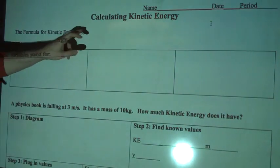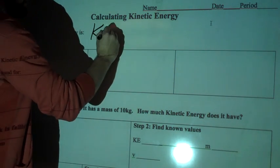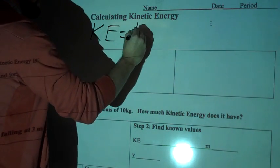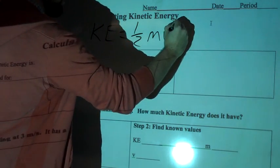We talked about potential energy before and now we're going to get to kinetic energy. The formula for kinetic energy is KE equals one half mv squared.